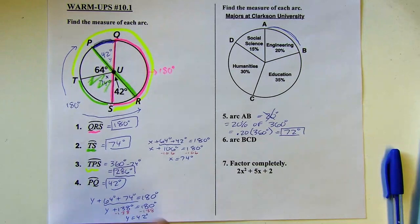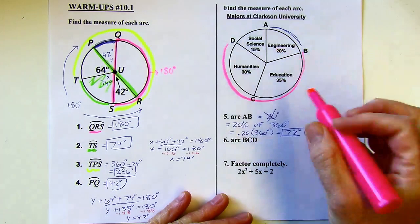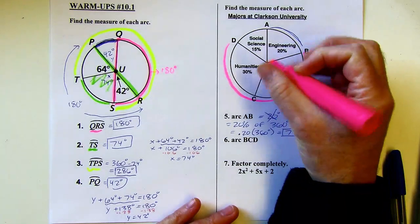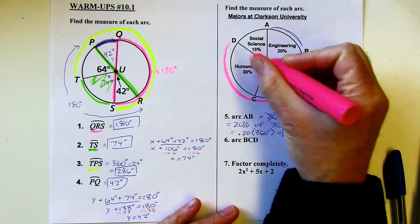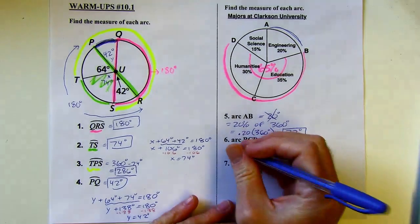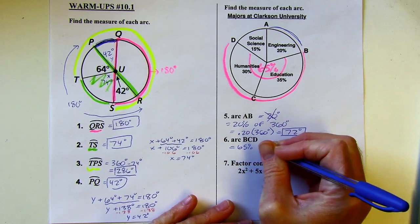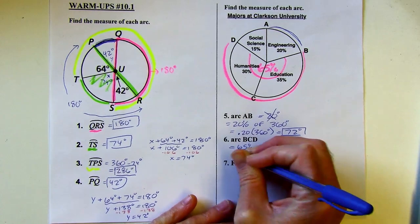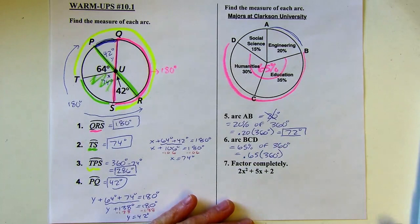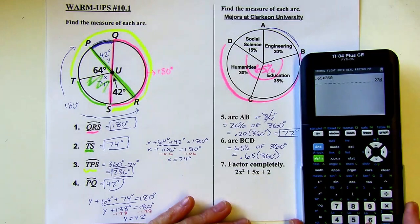All right, and then BCD. So I'm starting at B, going past C on my way to D, that's this. So first off, I need to figure out how much percent. Well, it's 30 plus 35, so this would be 65% altogether in that slice. So this is going to be 65% of 360 degrees. So 0.65 times 360, let's see, and that puts me at 234.